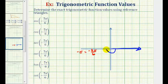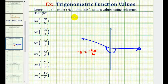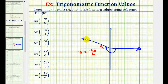So we rotate somewhere in here — this would be the terminal side of our angle. Because we've rotated pi over six radians past the x-axis, we know our reference angle must also be pi over six radians. To form the reference triangle, we'll sketch a segment that's perpendicular to the x-axis from the terminal side of the angle. This black triangle is our reference triangle.